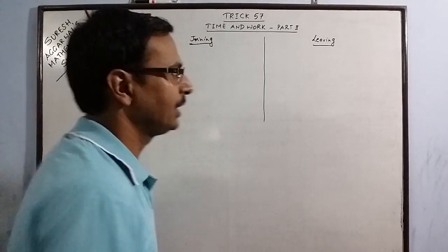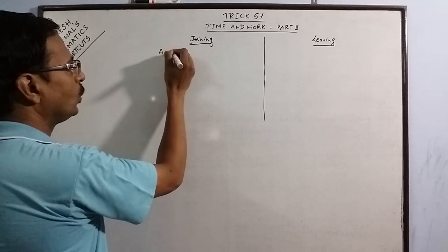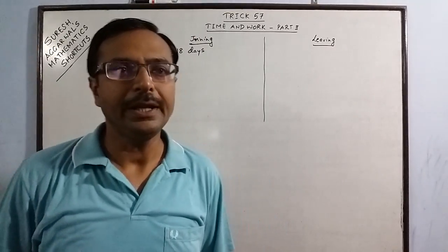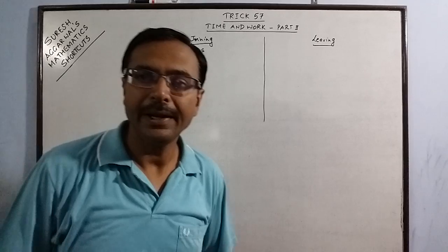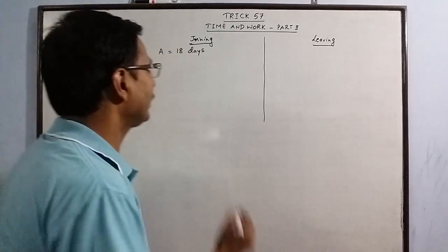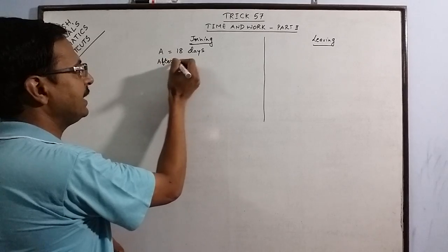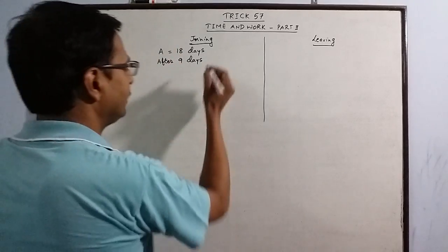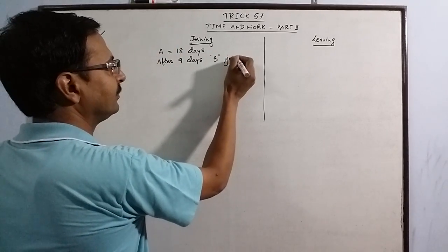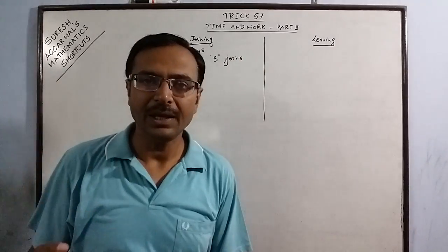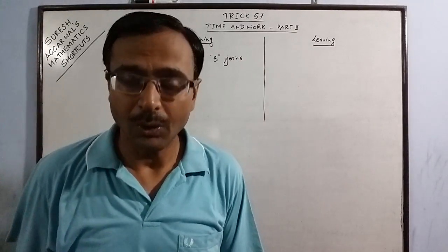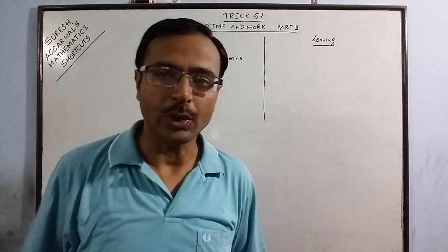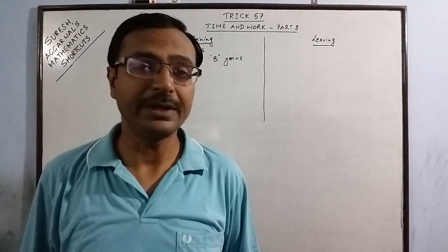Assume a situation where person A can do the work alone in 18 days. He starts the work, and after nine days another person, his friend B, joins and starts to accompany A in completing the work. Obviously A alone was taking 18 days; after B joins after nine days, they will take fewer days to complete the work.